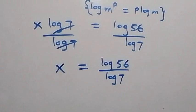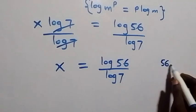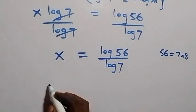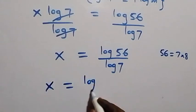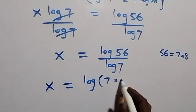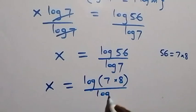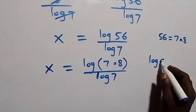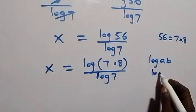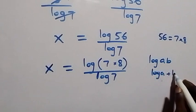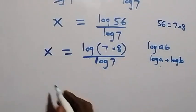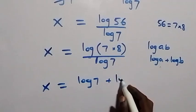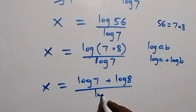From what we have here, we can write 56 as 7 times 8. So x equals log(7 times 8) over log 7. Applying the log product rule — log(a times b) equals log a plus log b — what we have becomes x equals (log 7 plus log 8) over log 7.